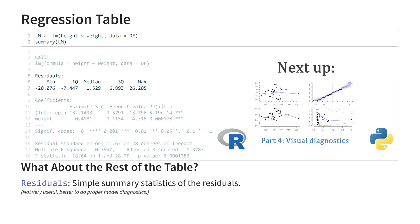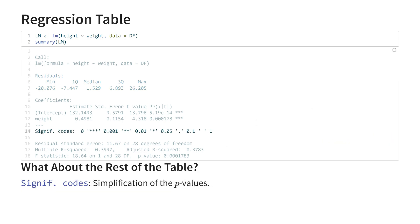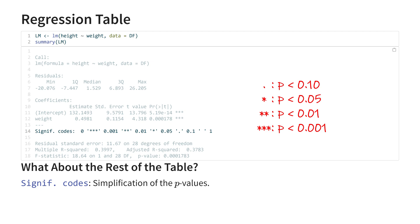The same goes for the part under the coefficients — just ignore it. All it shows is a simplification of the p-values, where 1 star is less than 0.05, 2 stars less than 0.01, etc. This might help as a visual guide when you're dealing with very large regression tables, but it isn't adding any new information, and in your report you should mention the actual p-values anyway.